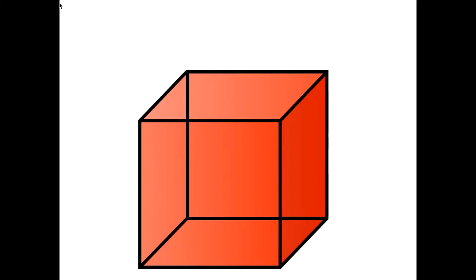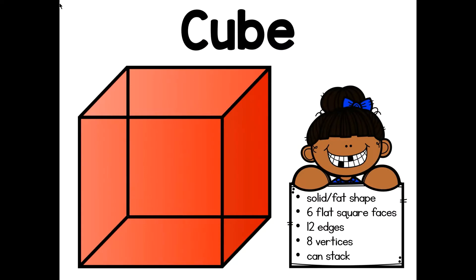Do you remember what shape this is? This is a cube! It is a 3D shape and we know that it is a solid or fat shape. It has six faces, 12 edges, and eight vertices. This shape can be stacked and it might look like a die or an ice cube when we see it in real life.